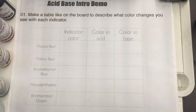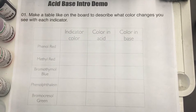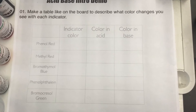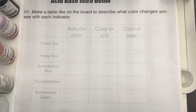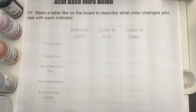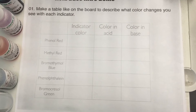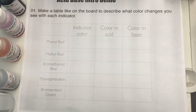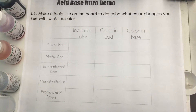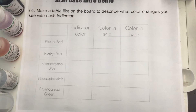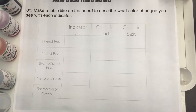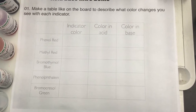You might want to pause this video right now because what you're going to be doing is drawing a table on a blank piece of paper. In the first column are a list of five different indicators and then three columns: the indicator color, the color in acid when it's mixed, and the color in base when it's mixed. Go ahead and pause so you can draw this table out on a blank piece of paper.